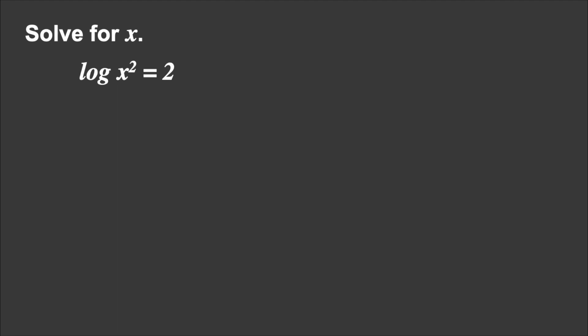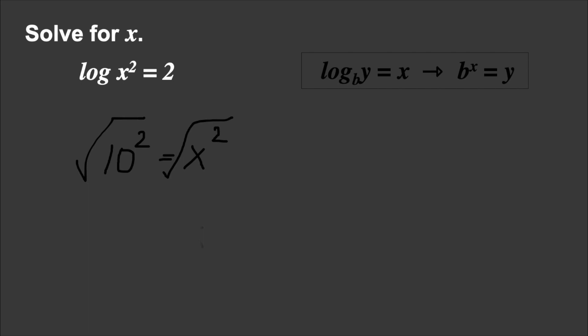Last example: solve for x in log(x²) = 2. Since the base is 10 (common log) and this is a one-sided logarithm, use the definition: 10² = x². Taking the square root of both sides: √(10²) = √(x²), giving 10 = x. So x = 10 is the value of x.